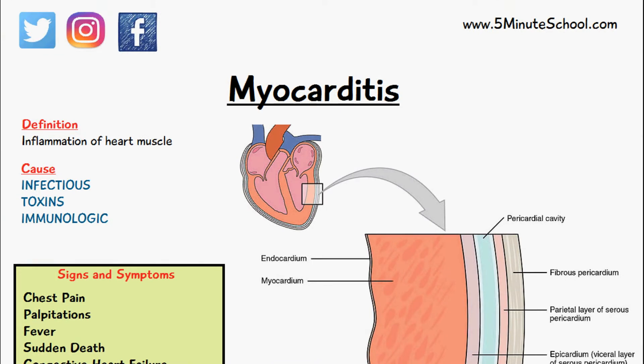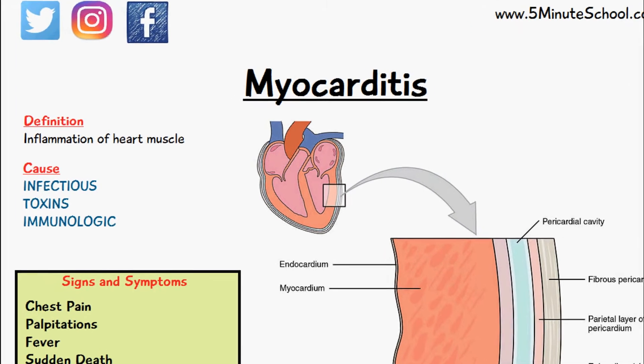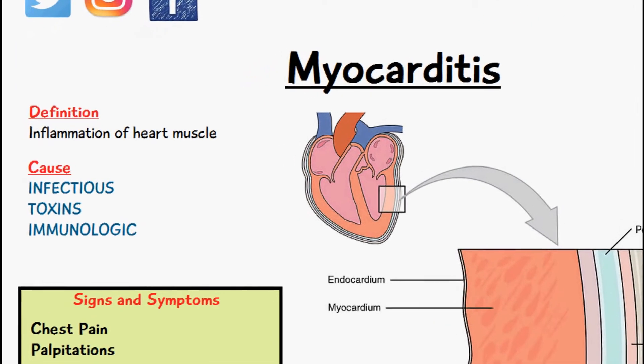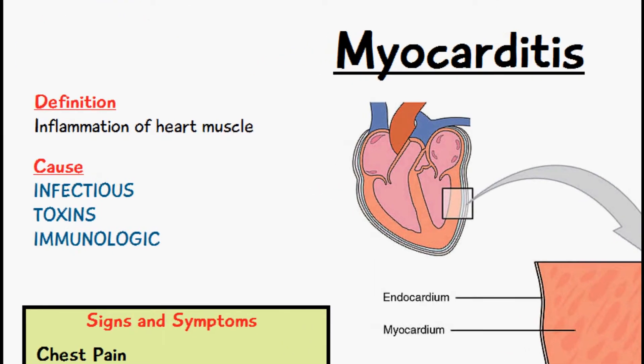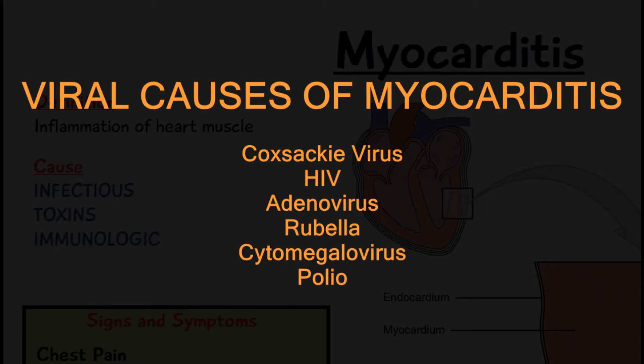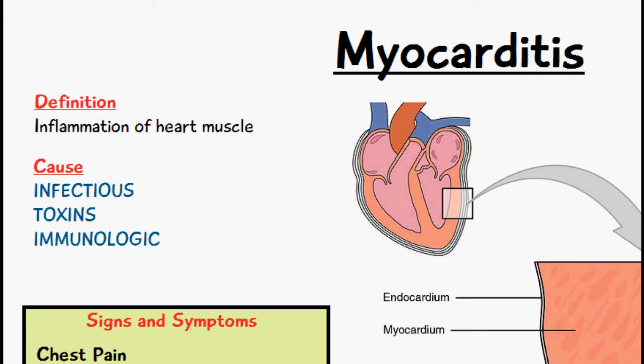There are various reasons that myocarditis can occur. The most common cause is due to some kind of infection. Some of the methods of infection could be viral, due to some kind of virus. These include viruses like rubella, polio, HIV, and the Coxsackie virus, which can all cause myocarditis.